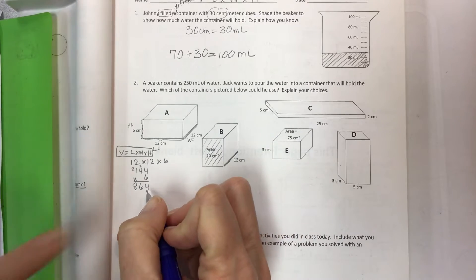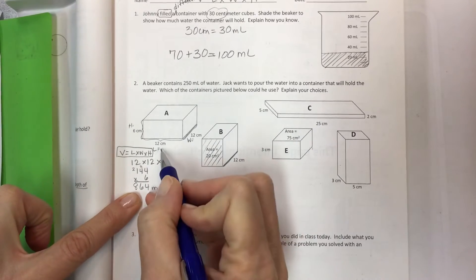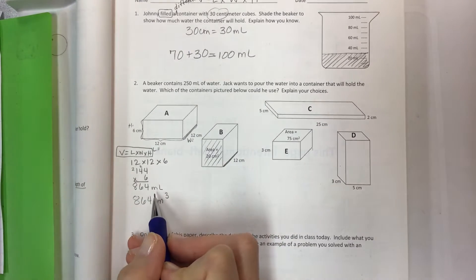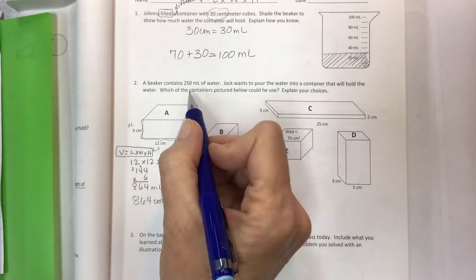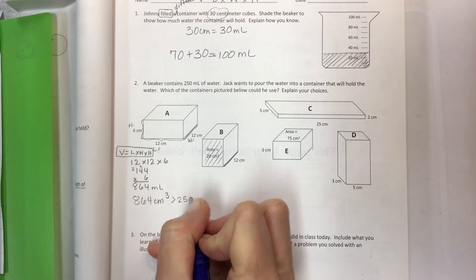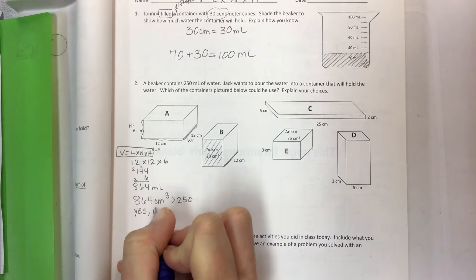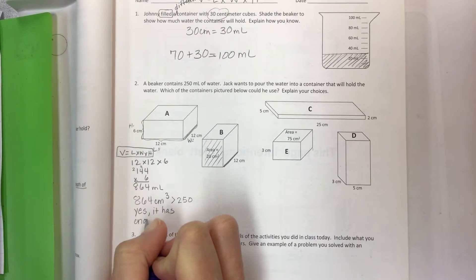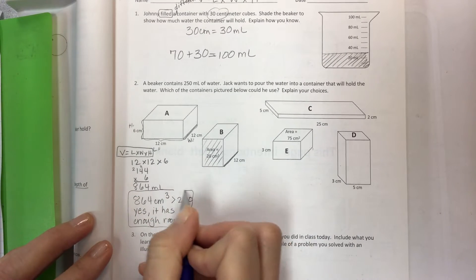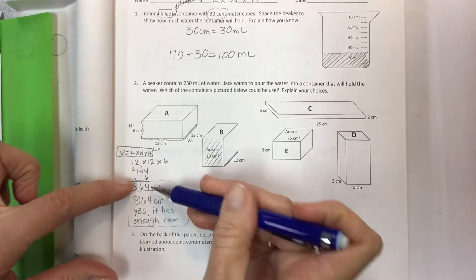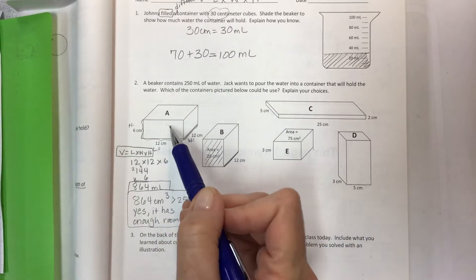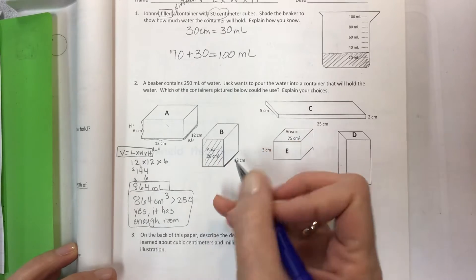So what we're doing is we're saying okay if the volume of this container is 864 milliliters - and again it would be 864 centimeters cubed but that's also equivalent to milliliters - then will it hold the 250 milliliters? So yes because this is greater than the 250. Yes it has enough room. Your explanation is here that this is equal to this and this is greater than that and so you would be able to fill this container with the water.